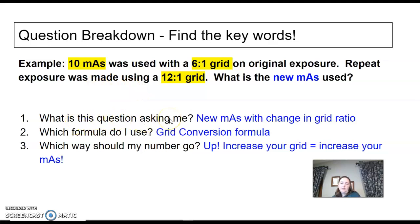What is this question asking me? It's asking me to figure out the new mAs with a change in grid ratio. So which formula am I going to use? I'm going to use the grid conversion formula. Which way should my number go?